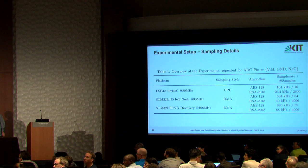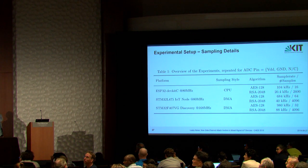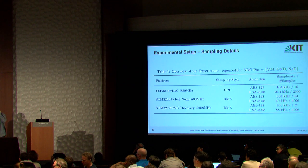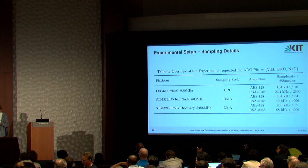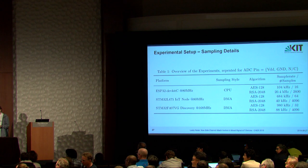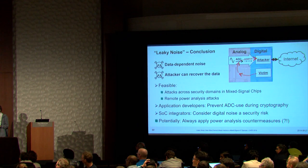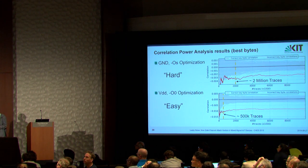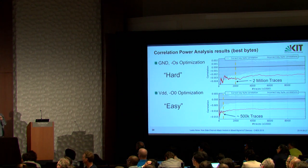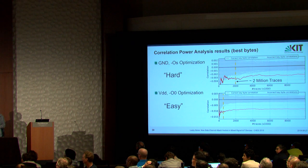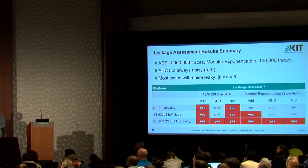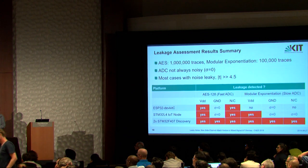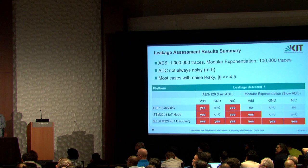A question was asked about the wide range in trace counts. The 1,000 traces shown earlier were just preliminary averaged experiments to visualize leakage — not the CPA result. For the actual CPA, 10 million traces were used, with about 2 million needed before some key bytes correlated well. In the simplified setup, about 500K traces were sufficient. For leakage assessment, 1 million traces were used for AES and 100K for modular exponentiation.